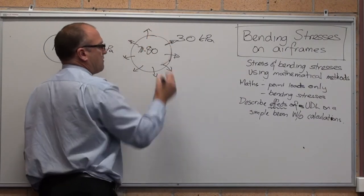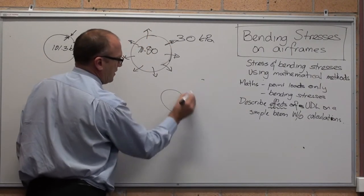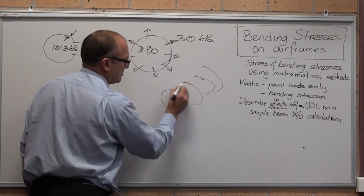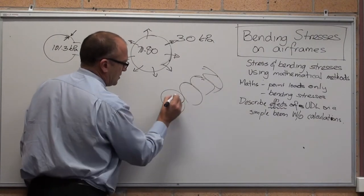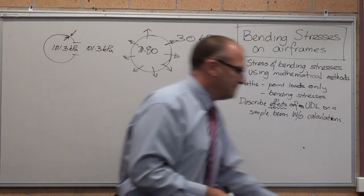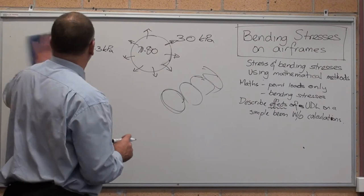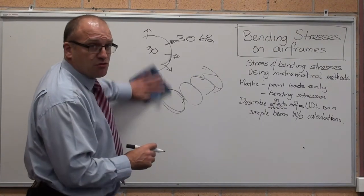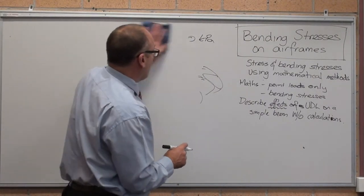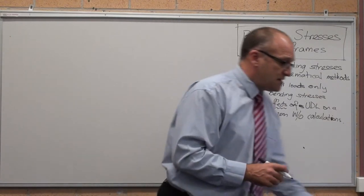They're called hoop stresses, because if you look at the plane in 3D, it's like a series of hoops. Hoop stress is one type of stress, but that's more creating a tensile stress in the skin.